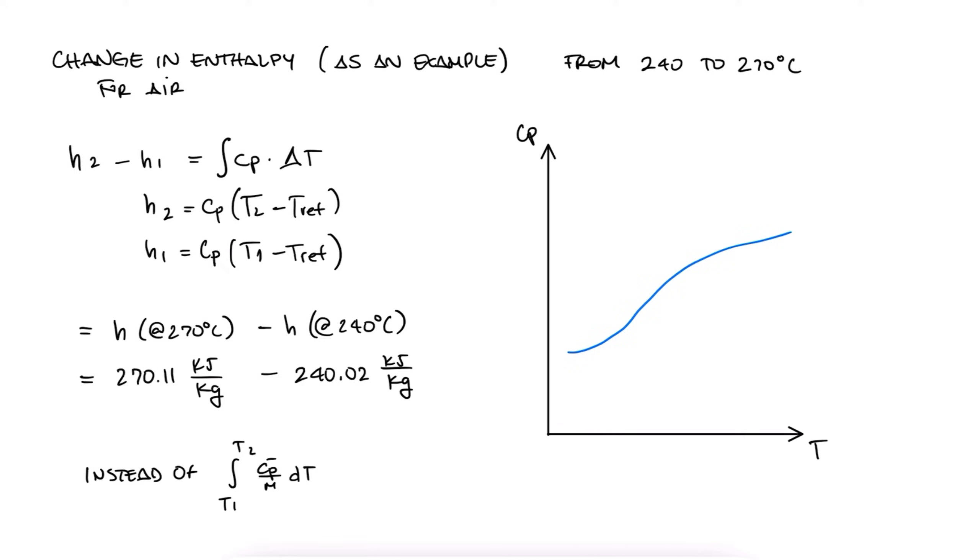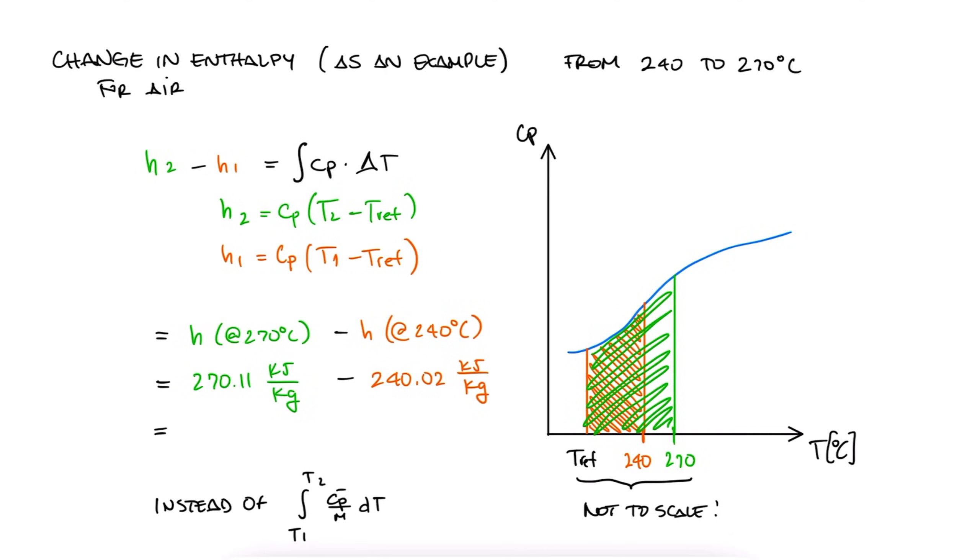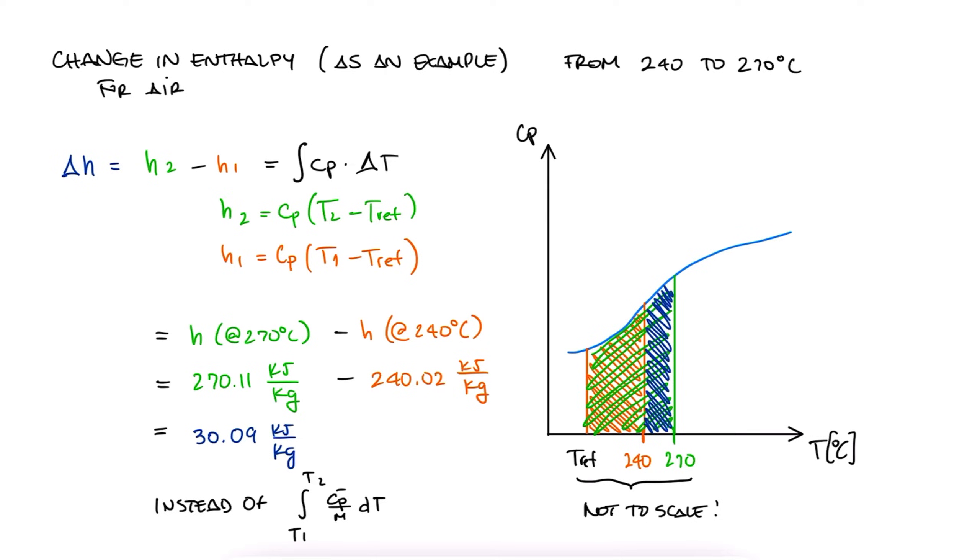And that's why if we have the 240.02 value, which means the area under the curve from the reference temperature up to 240 degrees Celsius, and the 270.11 value, which means the area under the curve from the same reference temperature up to 270 degrees Celsius, we can just subtract them to find the area that we're interested in.